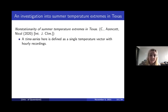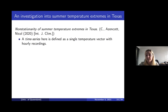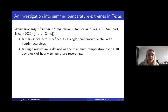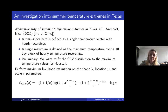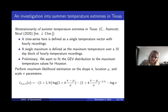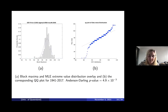Now that we've established that the block maxima method can model extremes of a time series, let me show an example where we've actually modeled extremes. This is based on work I did with Robert Azencott and Matt Nicol, published in 2020 in the International Journal of Climatology. We looked at time series of hourly temperature recordings and defined a single maximum to be the maximum over a 10-day block, which is 240 hourly values. Our preliminary work was to look at the time series for Houston and see if we could get a GEV model for those summer temperatures, so we performed maximum likelihood estimation on the negative log likelihood of the GEV with shape, location, and scale parameters.